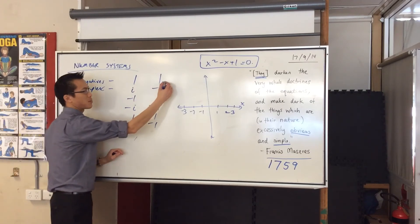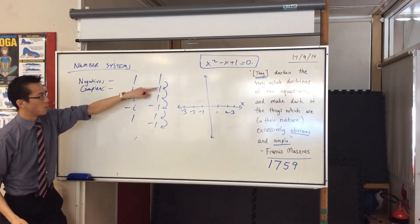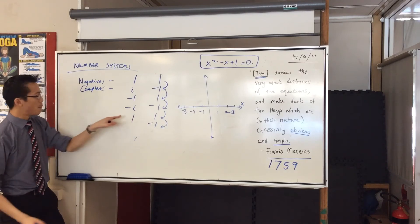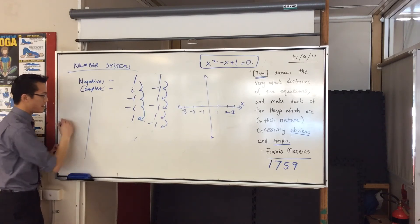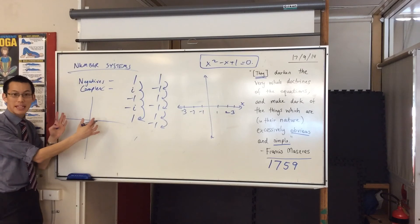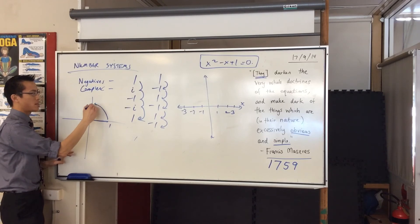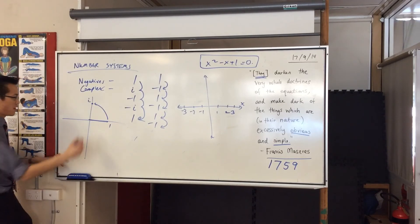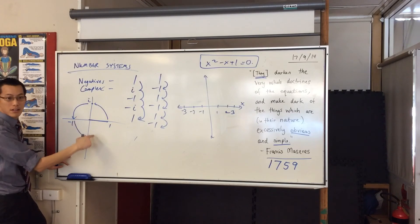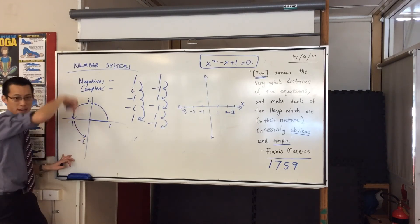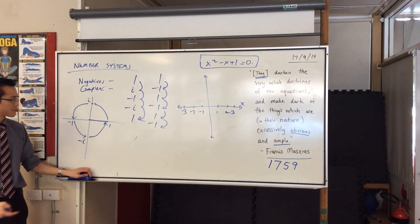With negatives, it takes just 2 multiplications to get back to the original. But with i, it takes 4. So instead of opposites and flipping, the intuitive meaning of i is rotation. Here's 1 on the coordinate plane. Multiply by i once, you get here. Multiply again, you get here. Multiply a third time, that's negative i — you're going down. Multiply the fourth time and you're back where you started. So it's rotation.